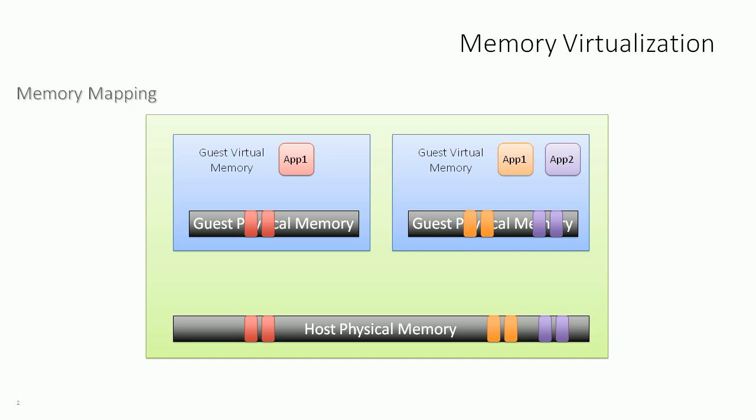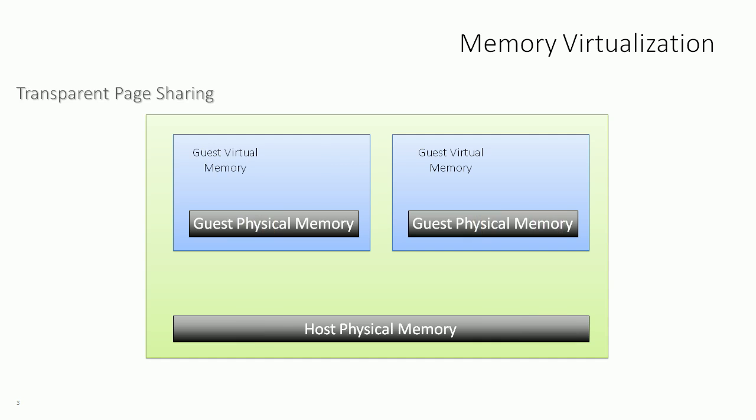This is how the ESXi host efficiently shares memory — it only gives each virtual machine the memory it actually needs at that moment. There's another way the host becomes even more efficient: by deduplicating identical memory pages. This is called transparent page sharing, or memory deduplication, and it allows identical memory pages to only be stored once.